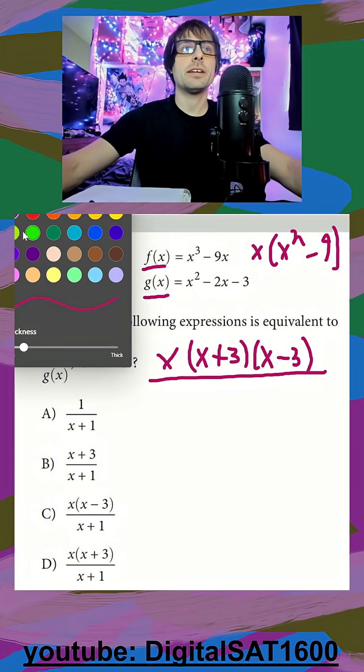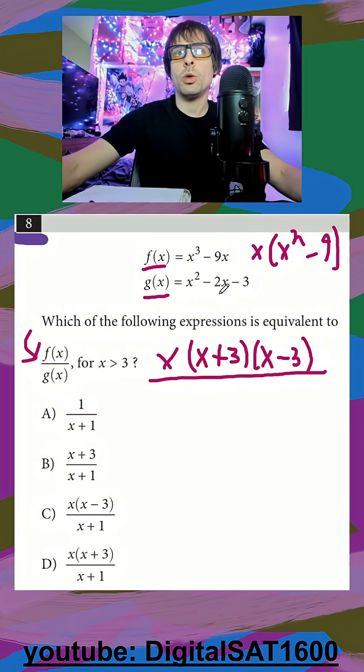And then for our denominator, this is just going to be what multiplies to negative three that adds to negative two. And we're going to have x plus one, and x minus three.